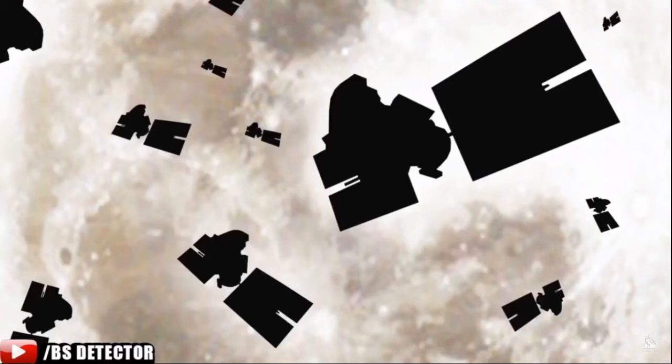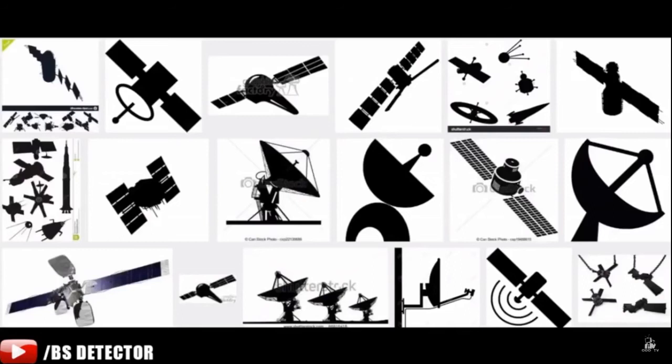So I go onto Google and I type in 'silhouette of satellites,' expecting to see something like this. And then this appears. What is that? Those just look like cartoons to me. I didn't even type in PNG afterward. I didn't even type in clip art — just 'satellites silhouette.' And this is what I got.